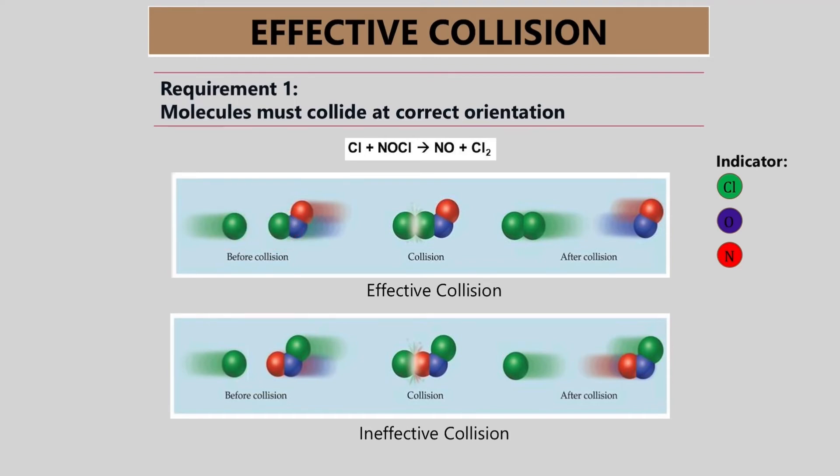Green one, chlorine, can collide with green one also, and also chlorine. That is the correct orientation for effective collision to occur. When correct orientation is happening, chemical reaction will happen and this will lead to the formation of the product.